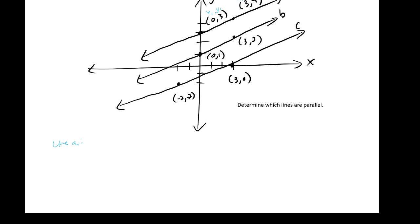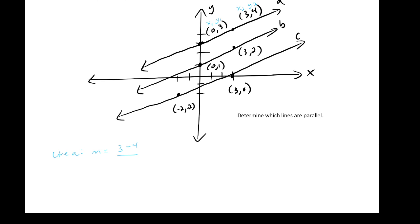When calculating slope, M is going to be equal to 3 minus 4 over 0 minus 3. That's going to give us negative 1 over negative 3. Or, in other words, our slope is 1 third.